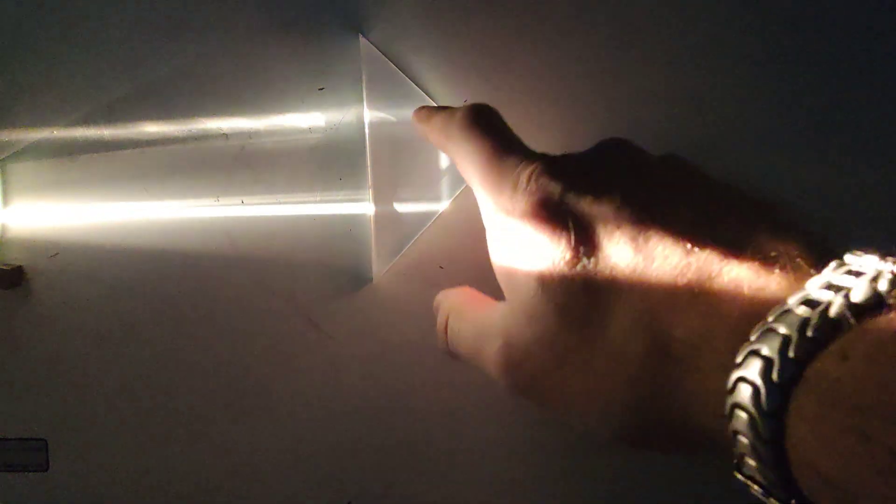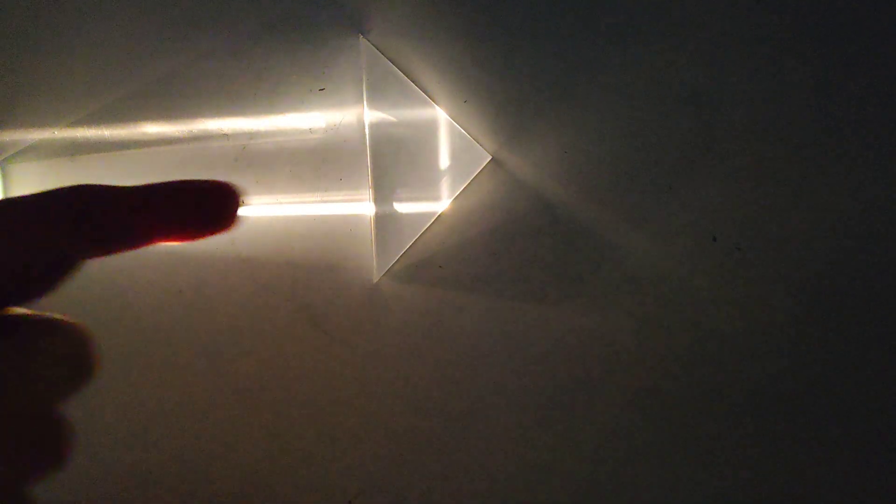We can also do this one - cat's eye. Light comes in, totally internally reflected, totally internally reflected again, comes out, and you've got the cat's eye. So if you're driving along, your headlights shine that way and they come back to you, just like a cat's eye.